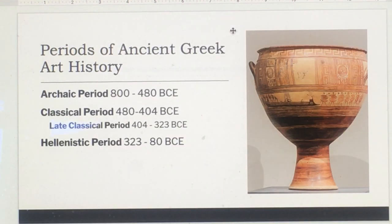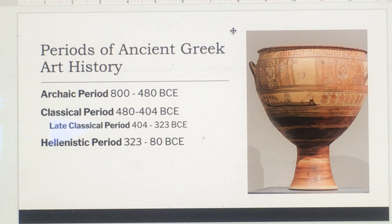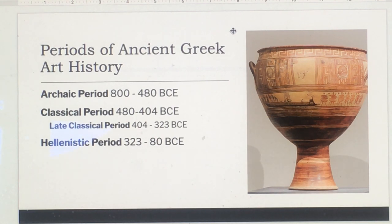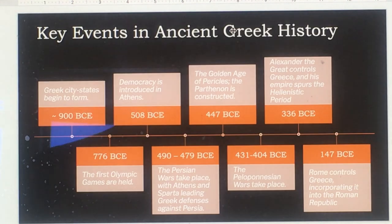There's the Archaic period from 800 to 480 BCE, the Classical period from 480 to 404 BCE, the Late Classical period 404 to 323 BCE, and the Hellenistic period 323 to 80 BCE — 80 years before the birth of Christ, which is our dividing line in ancient history.